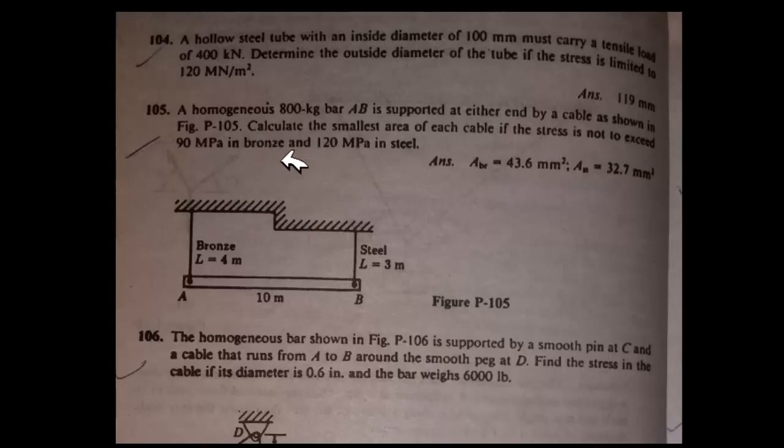Calculate the smallest area of each cable if the stress is not to exceed 90 megapascals in bronze and 120 megapascals in steel. This is your bronze and this is your steel, and the rod is hanging by those two cables. We have to find out the smallest area of each cable that could support this load.